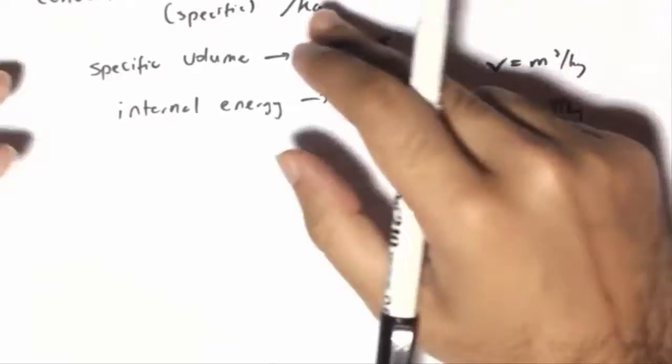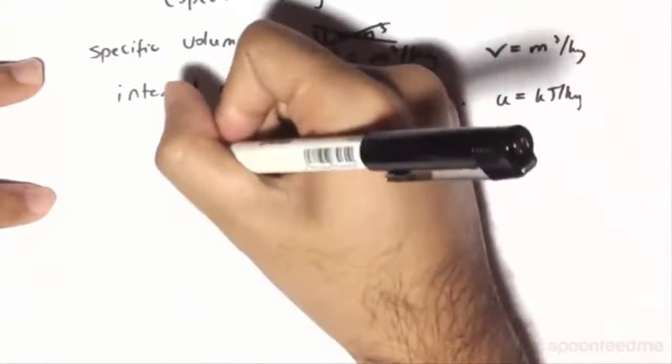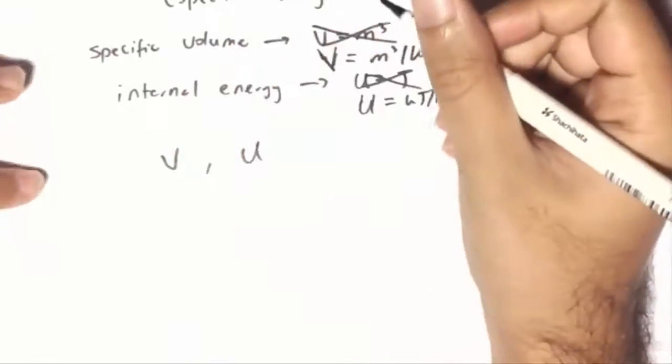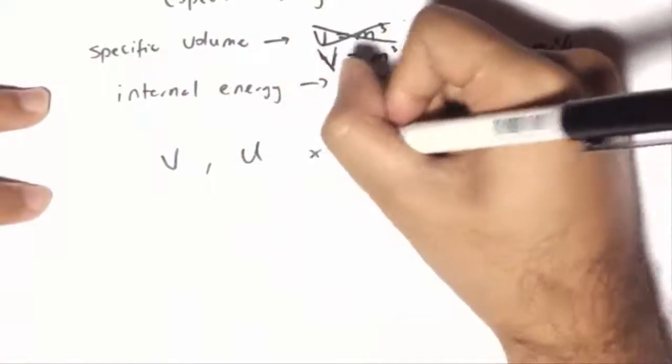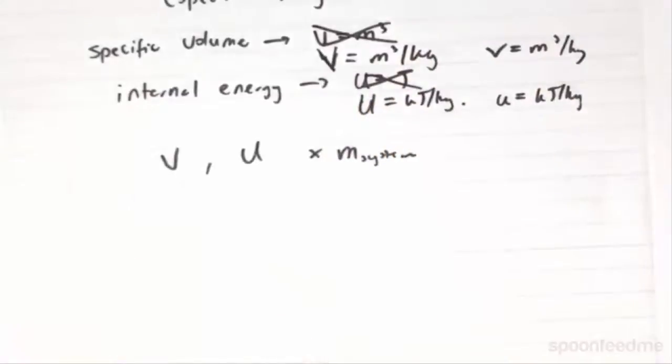Naturally, since it is in terms of per kilogram, to get the total value of this property, the capital V or the capital U, we just have to multiply them by the mass of the system. This simple method of changing extensive properties to intensive ones makes our life much simpler, especially in analyzing a host of our processes.